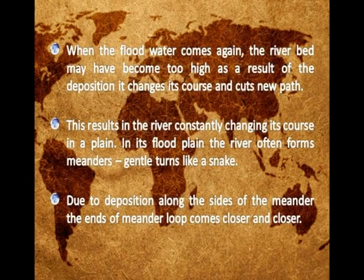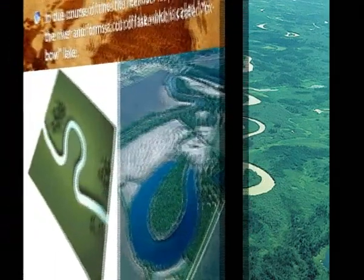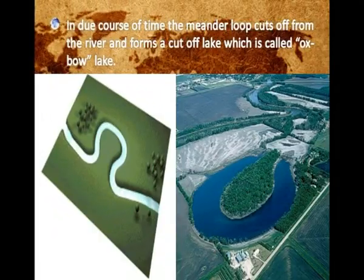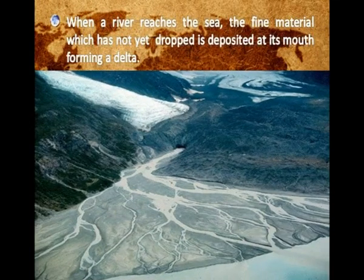Due to deposition along the sides of the meander, the ends of the meander loop come closer and closer. In due course of time, the meander loop cuts off from the river and forms a cut-off lake called an Oxbow Lake. When a river reaches the sea, the fine material which has not yet dropped is deposited at its mouth, forming a delta.